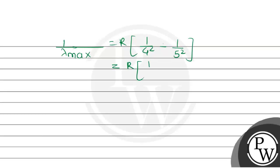This will become R in bracket 1 by 16 minus 1 by 25. So this will be R times 9 upon 25 times 16.